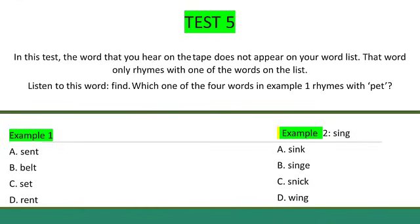Test 5. In this test, the word you will hear does not appear on your word list. That word only rhymes with one of the words on the list. Example 1. Listen to this word: pet. Which of the four words in example 1 rhymes with pet? The correct word is set. The other words do not rhyme with pet. The letter written against set is C, and this is recorded by shading answer space C against number 1.